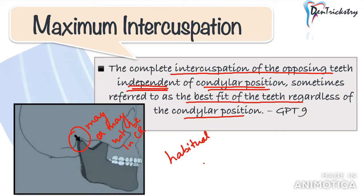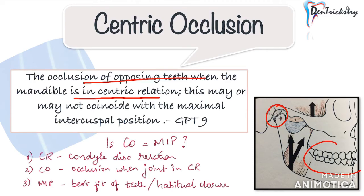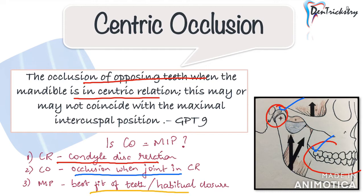Moving on, let us look at another definition: centric occlusion. It is defined as the occlusion of opposing teeth when the mandible is in centric relation. This may or may not coincide with the maximal intercuspal position. Is centric occlusion the same as MIP? This is a concept that is often confused. Centric relation is the condylar position. Centric occlusion is the occlusion of the teeth when the condyles are in centric relation — these two are interrelated. Whereas maximum intercuspation is the best fit of the teeth and does not depend on centric relation.